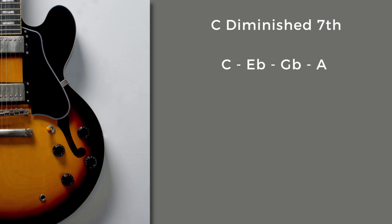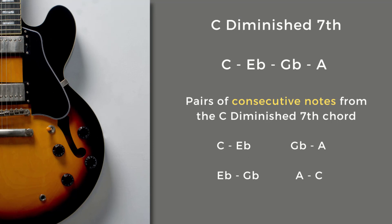For our example I'll be using the C diminished seventh chord. The first step is to identify its notes: C, E flat, G flat, and A — technically the A is a B double flat, but for our example I'll be identifying the note as A. Remember the rule: raise or lower two consecutive notes of the diminished seventh chord. I'll now go through the combinations of those consecutive notes.